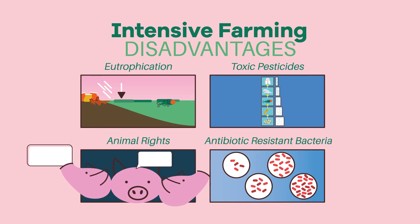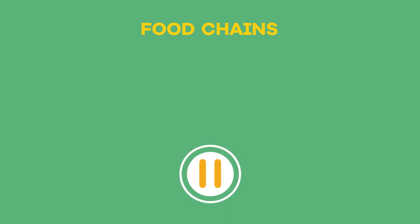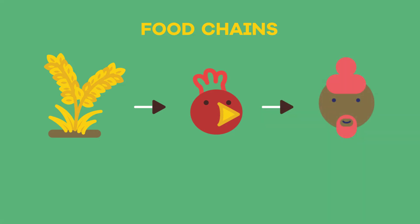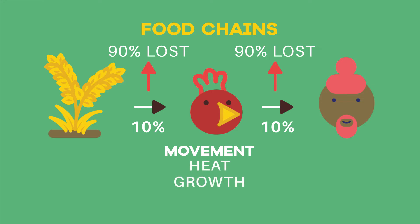To understand more about intensive farming, we need to think about food chains. Food chains show how energy is passed between organisms, but some energy is lost at each trophic level. Only 10% of the energy consumed by an organism is passed on to the next trophic level. The remaining 90% is lost during movement, as heat, in growth, and in feces.